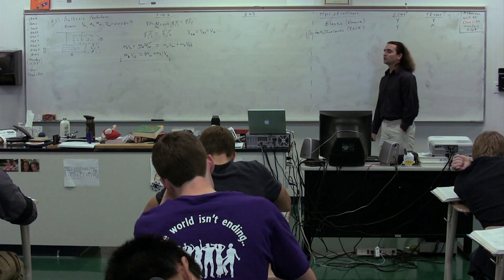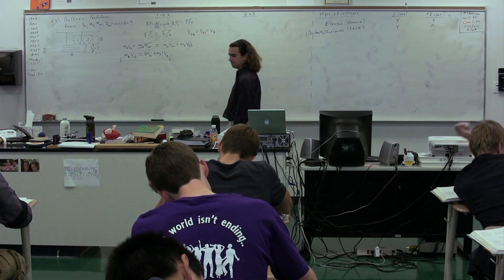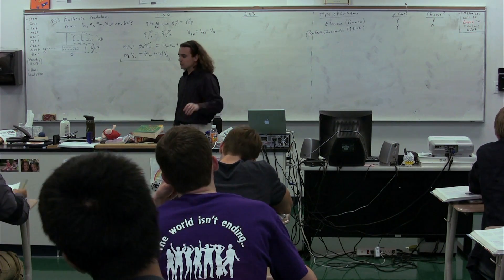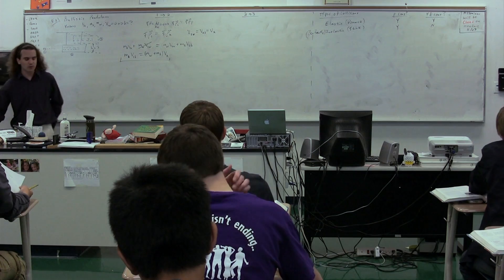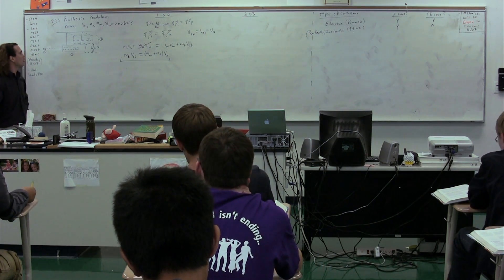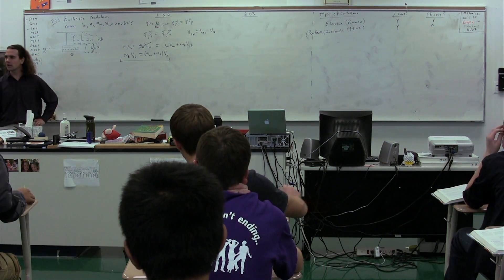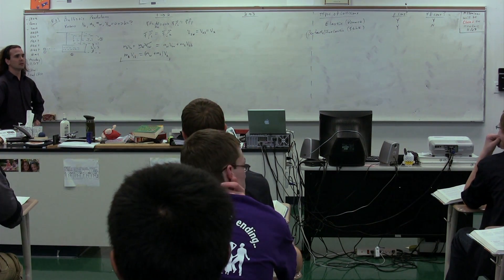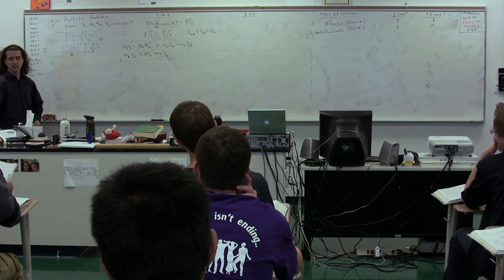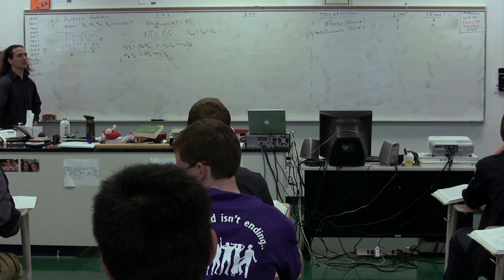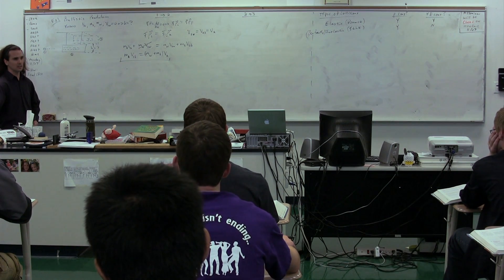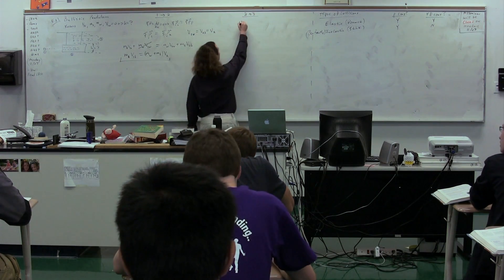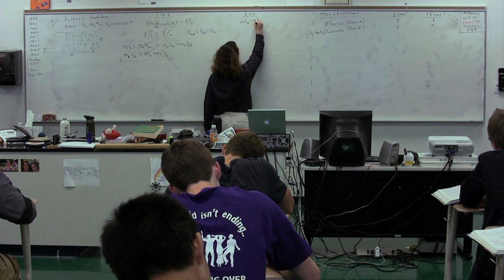From position two to position three, we have conservation of mechanical energy — because there's no friction and no external force applied. The net force would not be zero from two to three since gravity acts to slow the swing, but mechanical energy is conserved. So mechanical energy at two equals mechanical energy at three.